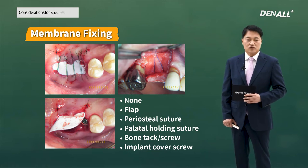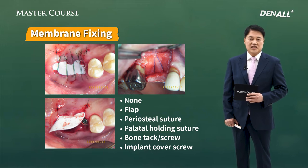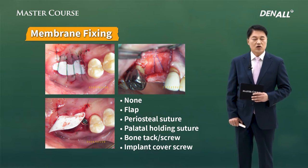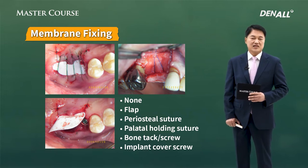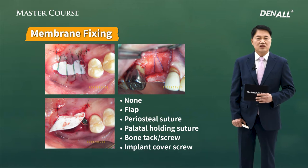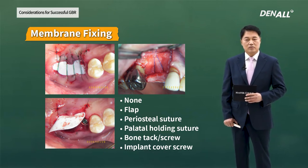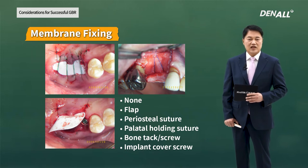Finally, wound stability. In order to make solid bone after bone graft, apply the membrane. If the membrane moves around, it becomes difficult to make solid bone, so you need to fixate and stabilize the membrane. You can use a bone tack or bone screw. I normally use periosteal suture — Dr. Boozer's suture — to fixate the membrane.